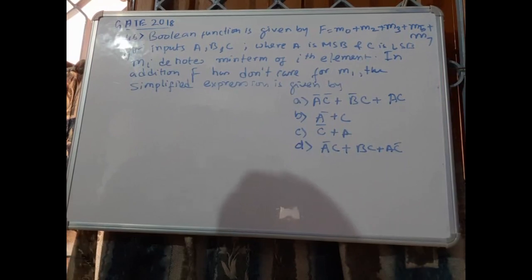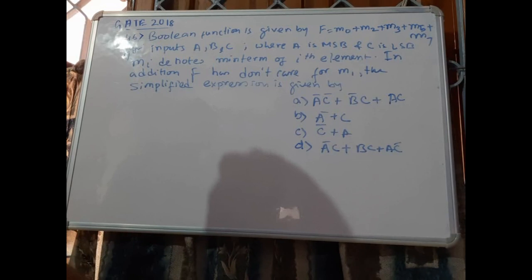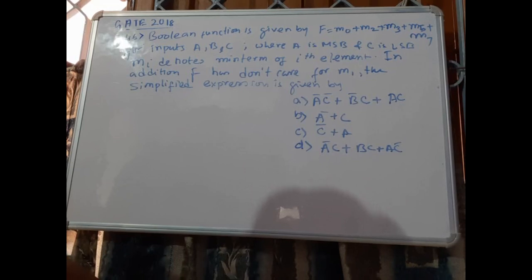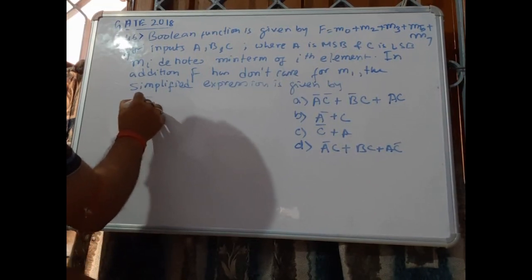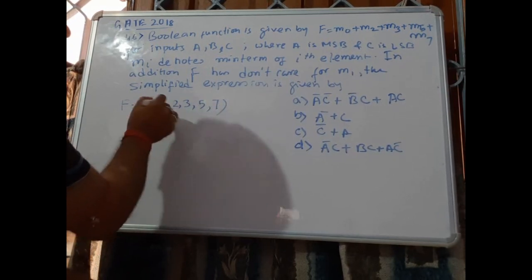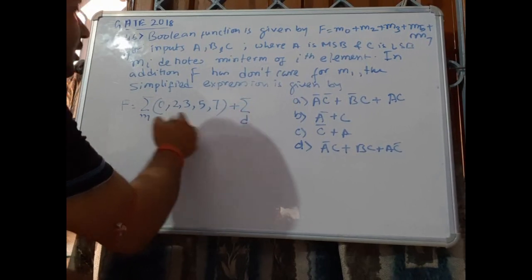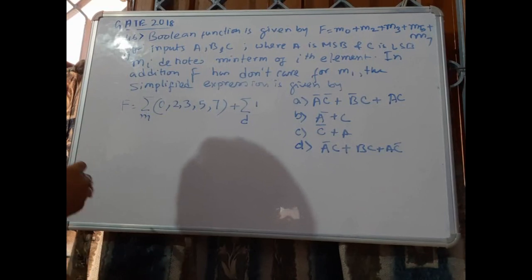This is problem number 46 for GATE 2018. The boolean function is given by f = m0 + m2 + m3 + m5 + m7 for inputs a, b, c, where a is the most significant bit and c is the least significant bit. mi denotes the minterm of the ith element. In addition, f has a don't care for m1. We need to find the simplified expression.